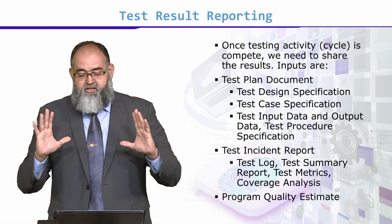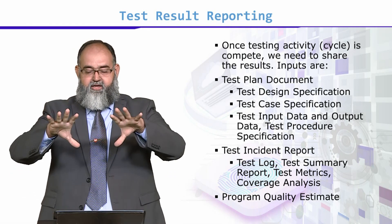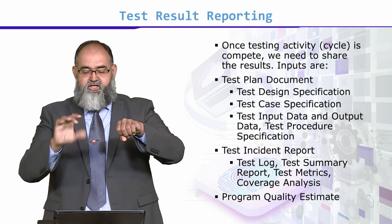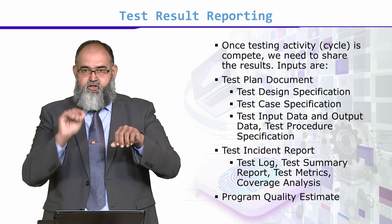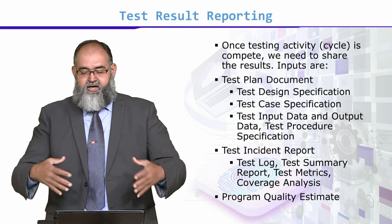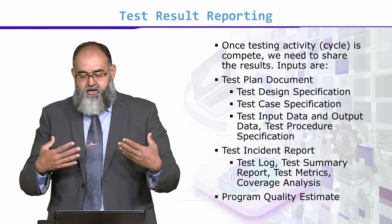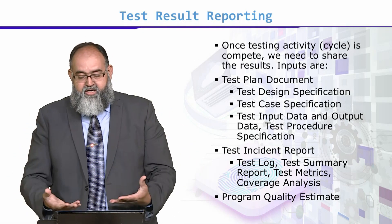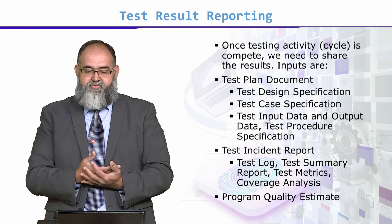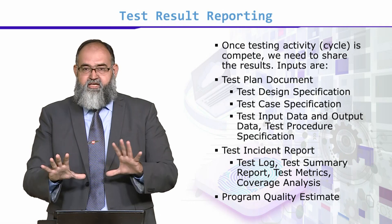So to recap: inputs are test plan document, test design, test cases, test suite, input data, test procedure, and specifications. The output is the test incident report — which means the test log, complete log, individual logs, failures, and screenshots.